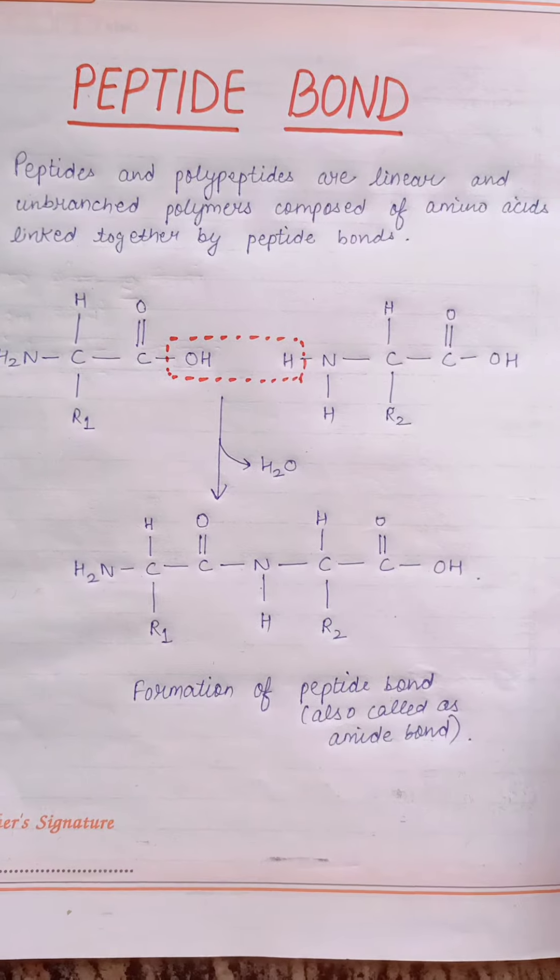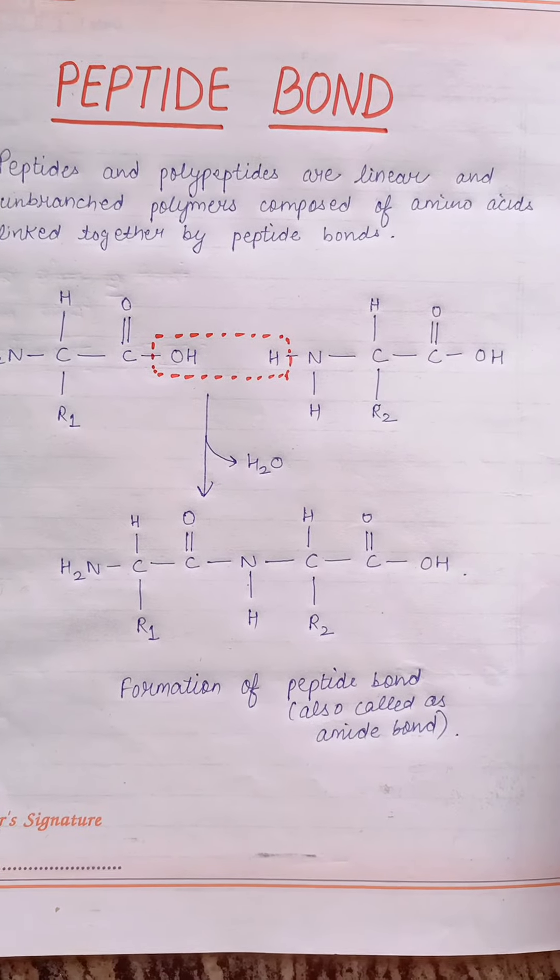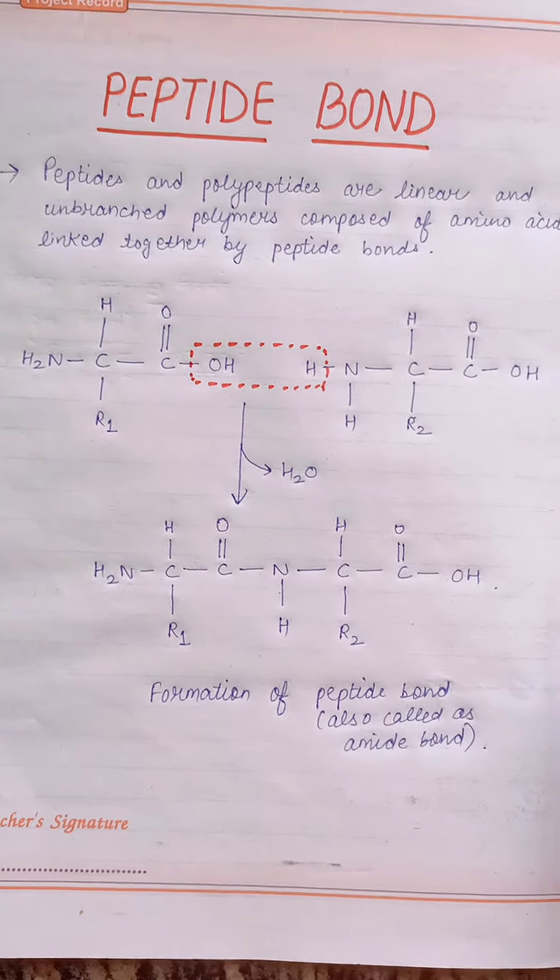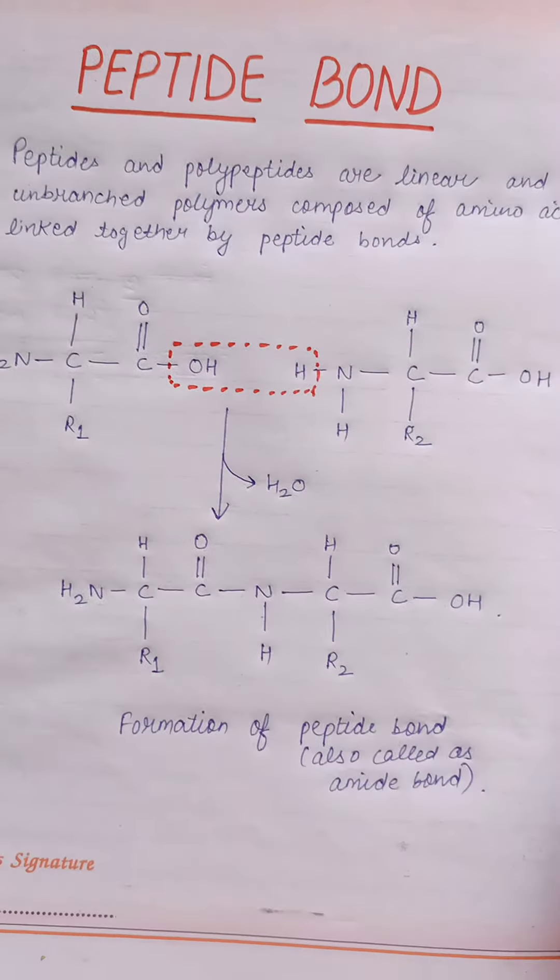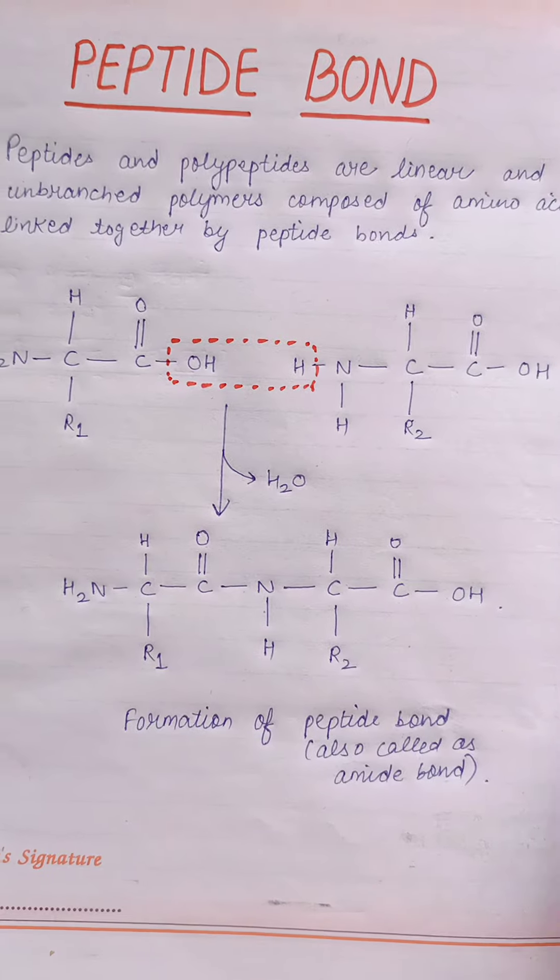When many amino acid residues are joined, the product is called a polypeptide. And how these peptide bonds are formed, we will discuss in this video.